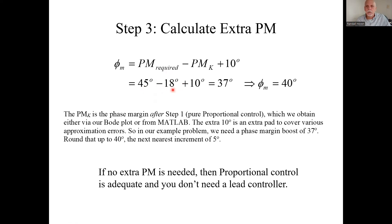So in our case it's 45 minus 18. If we use MATLAB we use our eyeball minus 20. The phase margin was 18 or 20, we subtracted and add the 10 degrees extra there, we get 37 degrees.